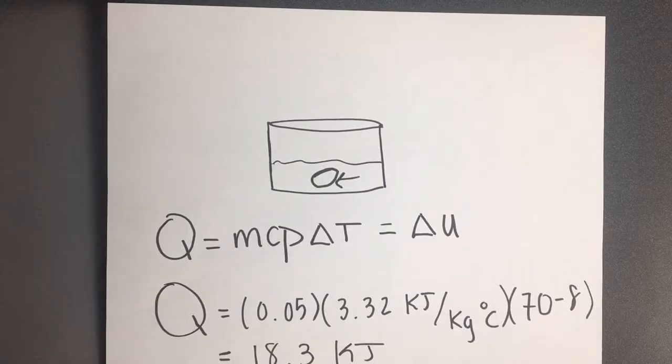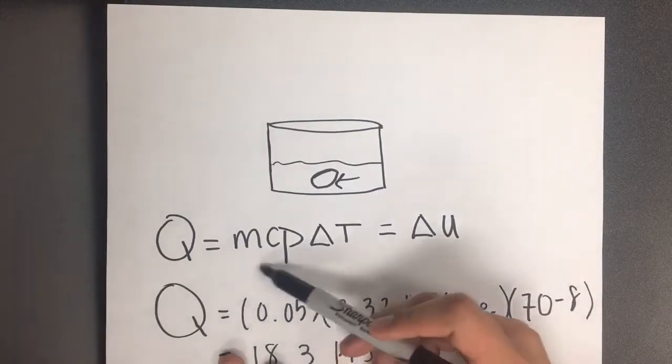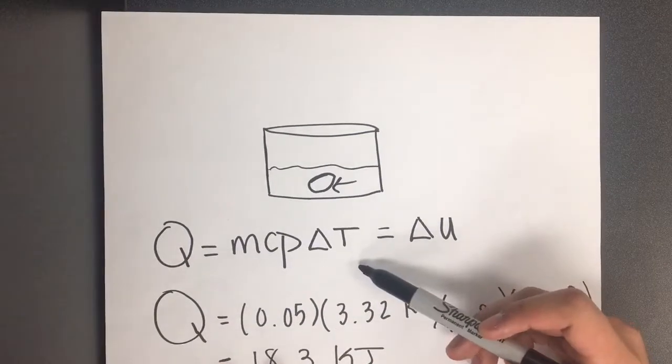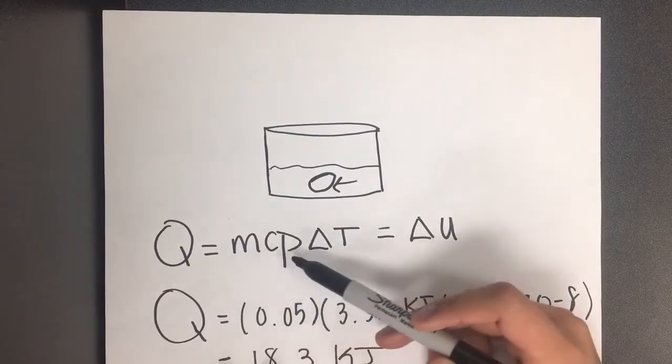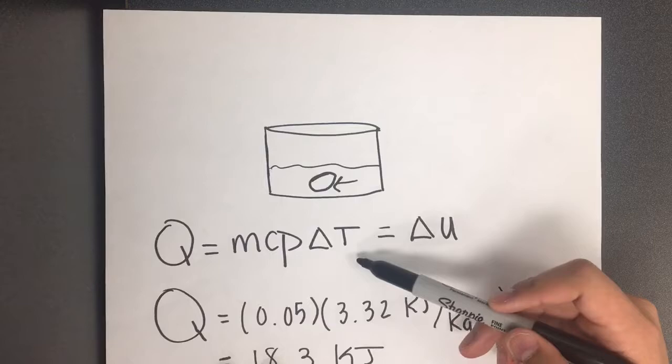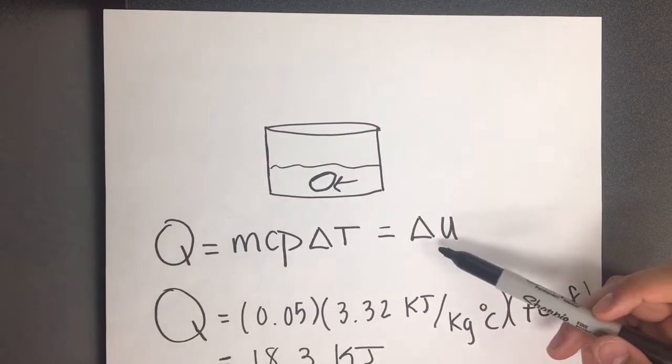In this example, we'll be showing the transfer of energy in the form of heat. As seen in this equation, the energy transferred from the water to the egg is equal to the mass of the egg times the heat capacity of the egg times the temperature difference, which is also equal to the internal energy.